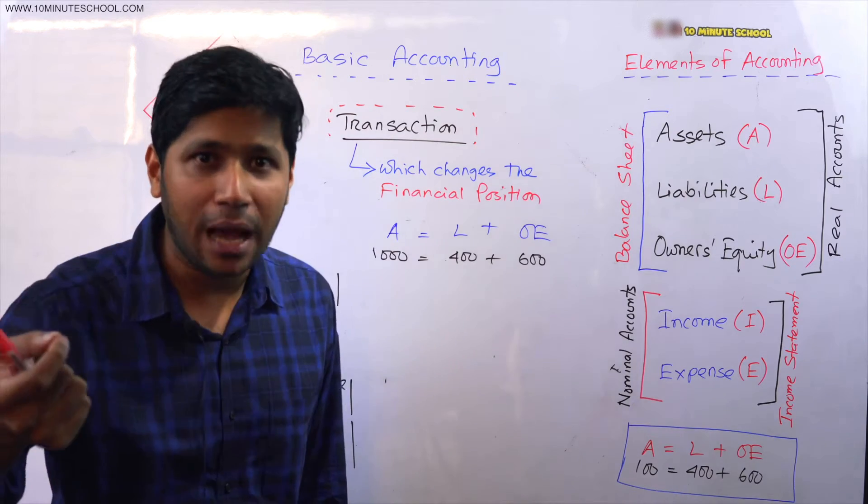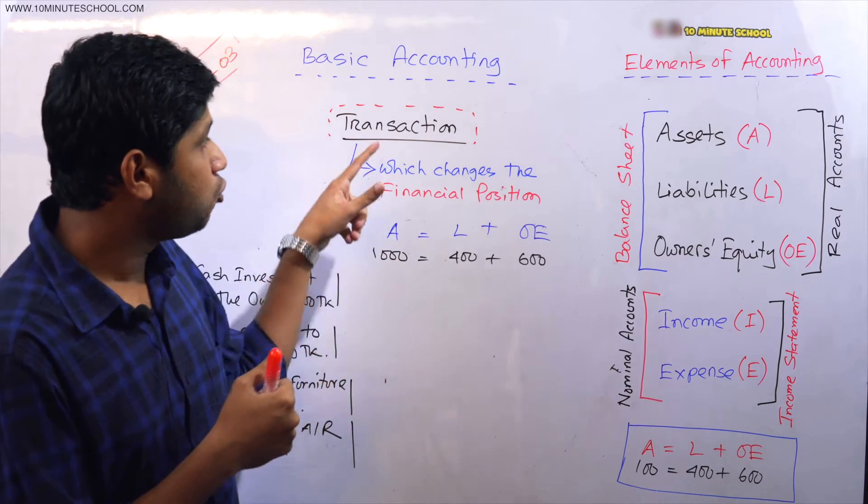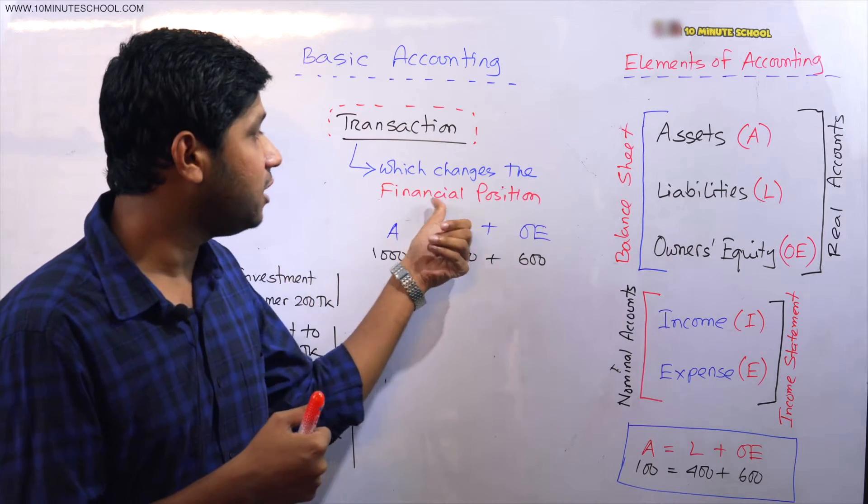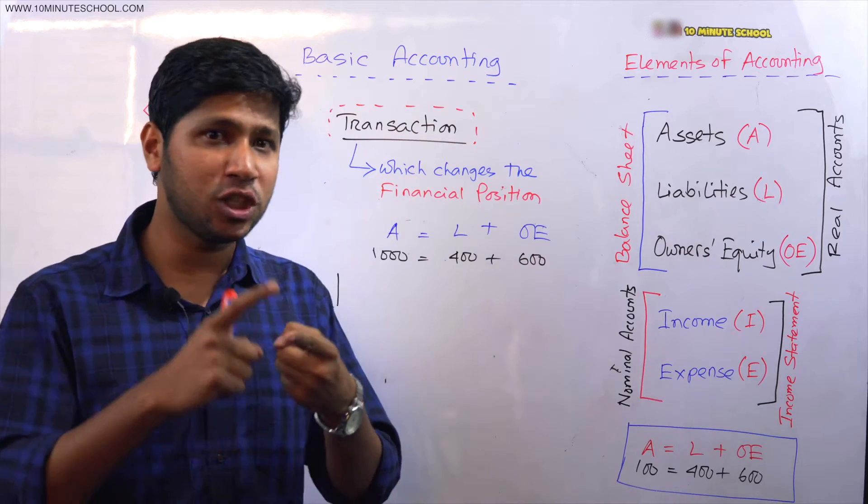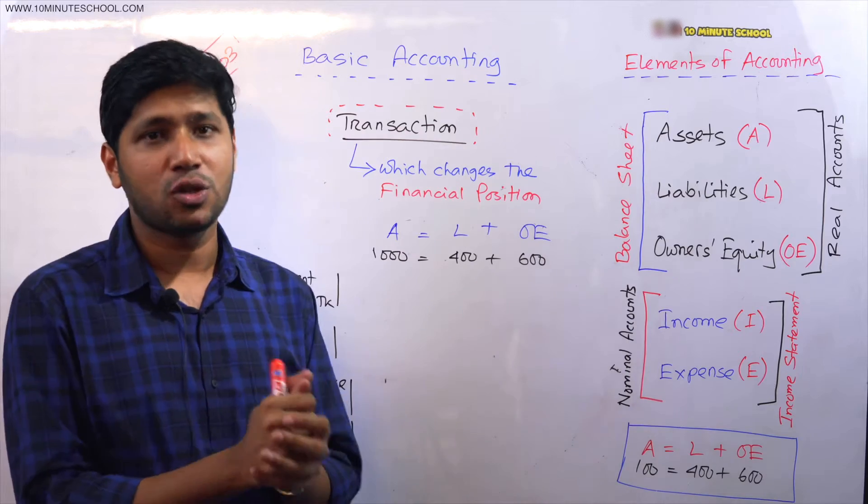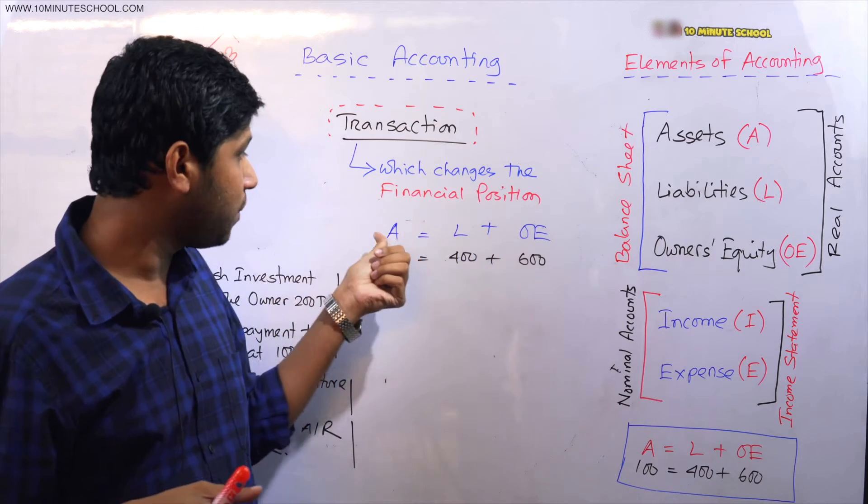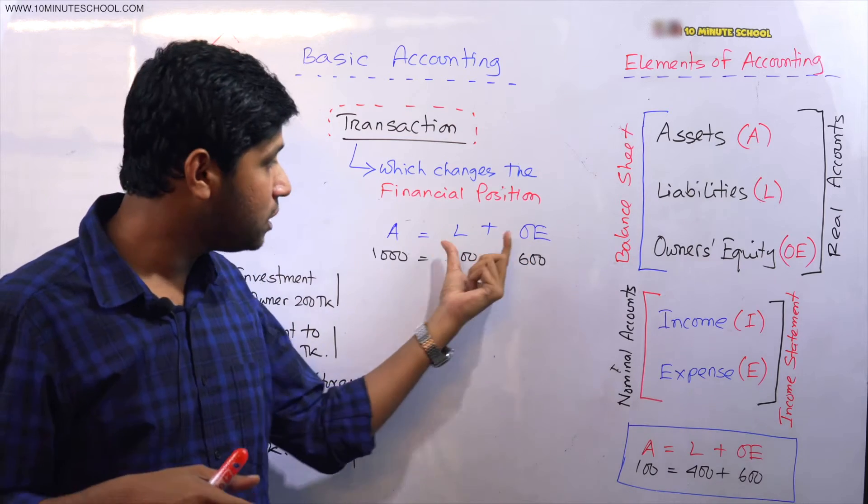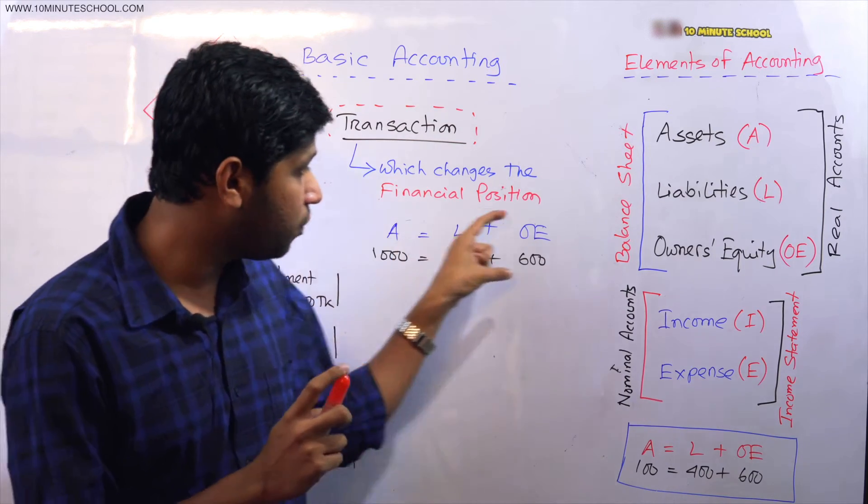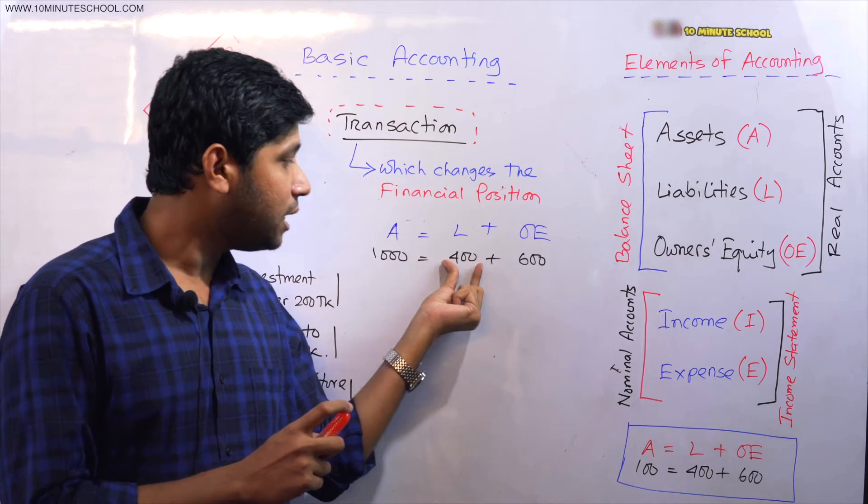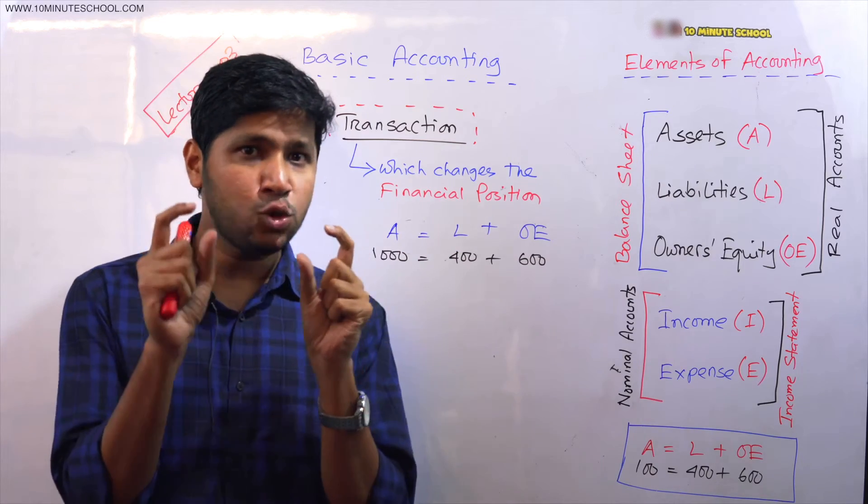A transaction is an event which changes the financial position. Financial position means the balance sheet or accounting equation (A = L + OE). So a transaction is any event that changes our financial position - that means changes in assets, liabilities, or owner's equity. Let me show you with an example. Our organization's financial position was total assets of 1000 taka, where third parties contributed 400 taka and the owner contributed 600 taka.